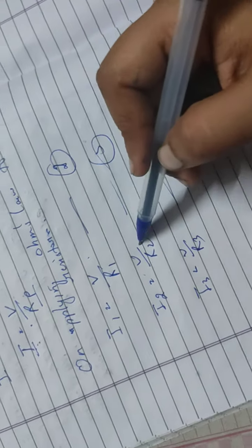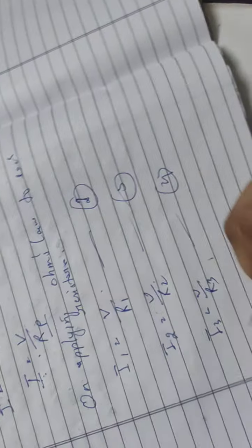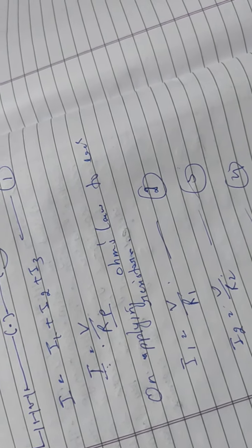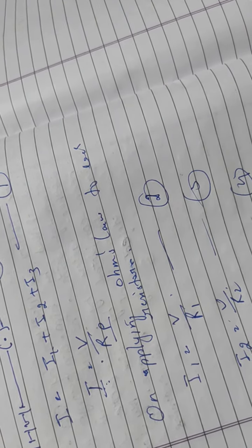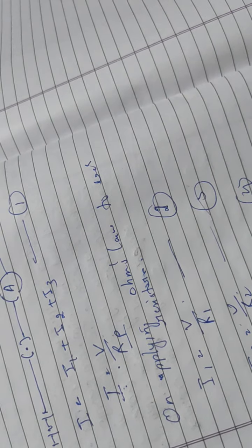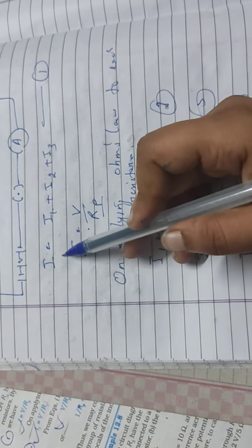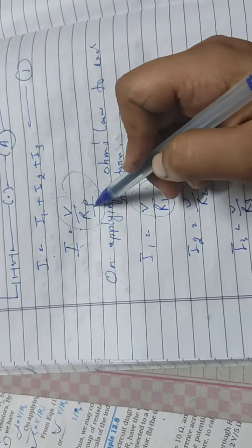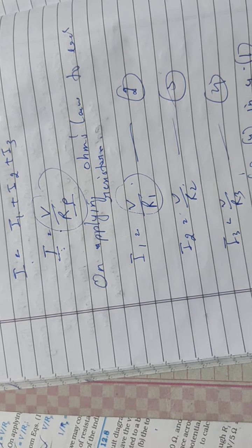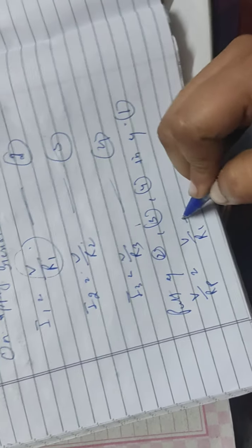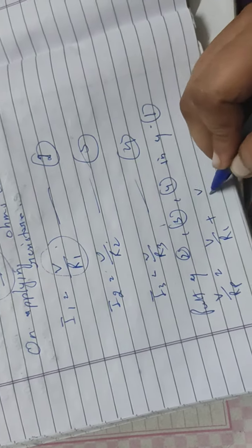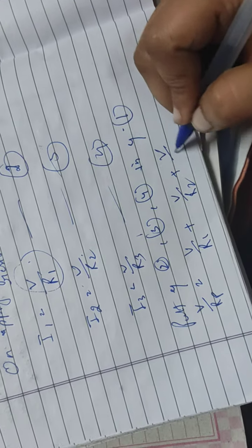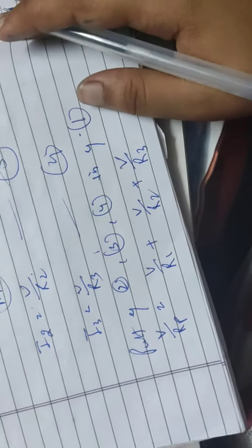Now put these equations in equation number 1. So put equation 2, 3, 4 in equation 1. So what will come? In place of I comes V by Rp. In place of I1 comes V by R1. In place of I2 comes V by R2. In place of I3 comes V by R3.